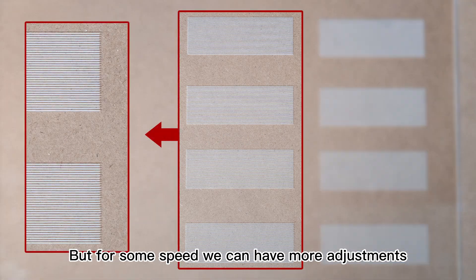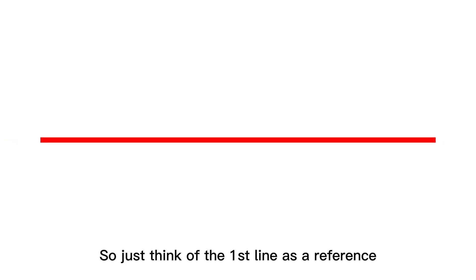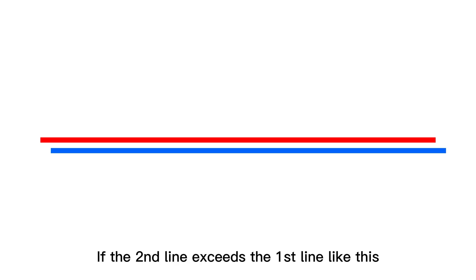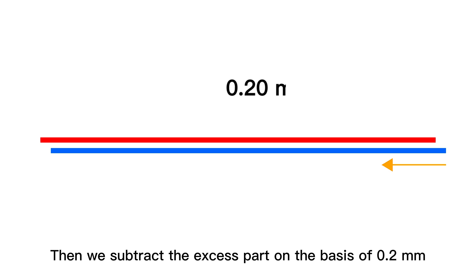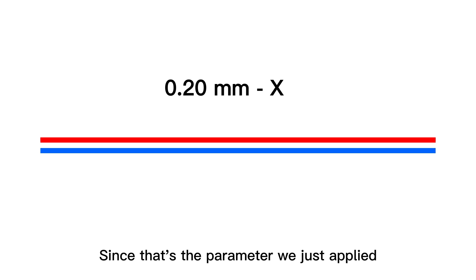Just think of the first line as a reference. If the second line exceeds the first line, like this, then we subtract the excess part on the basis of 0.2mm, since that's the parameter we just applied.